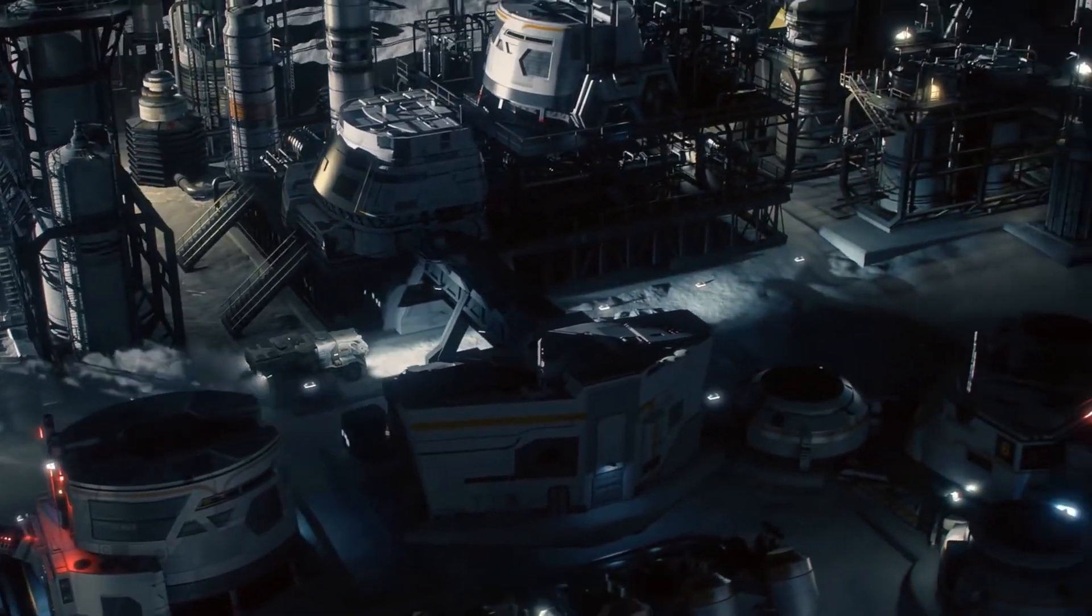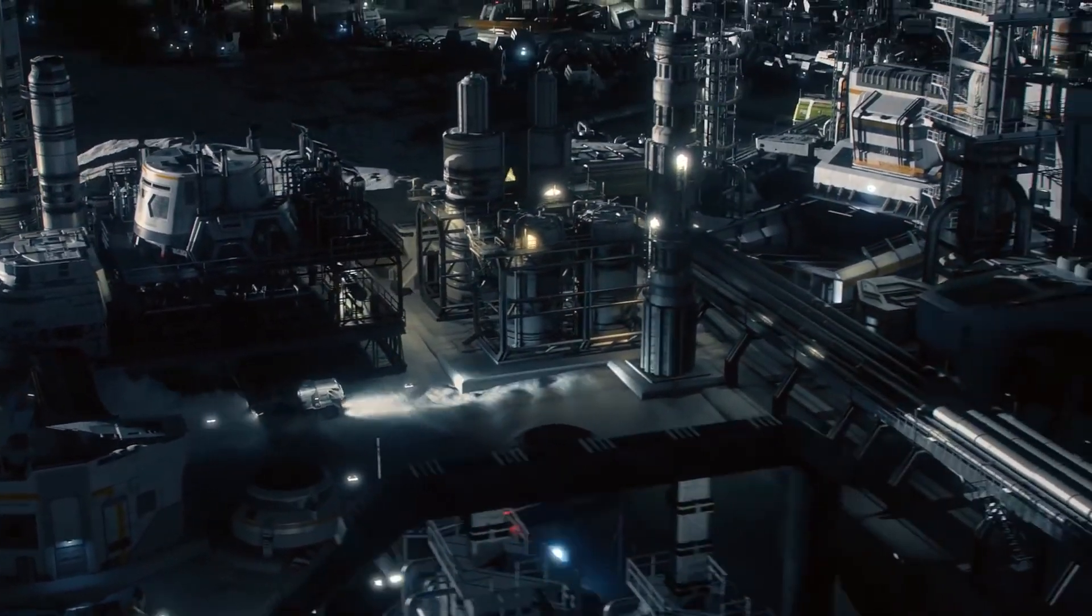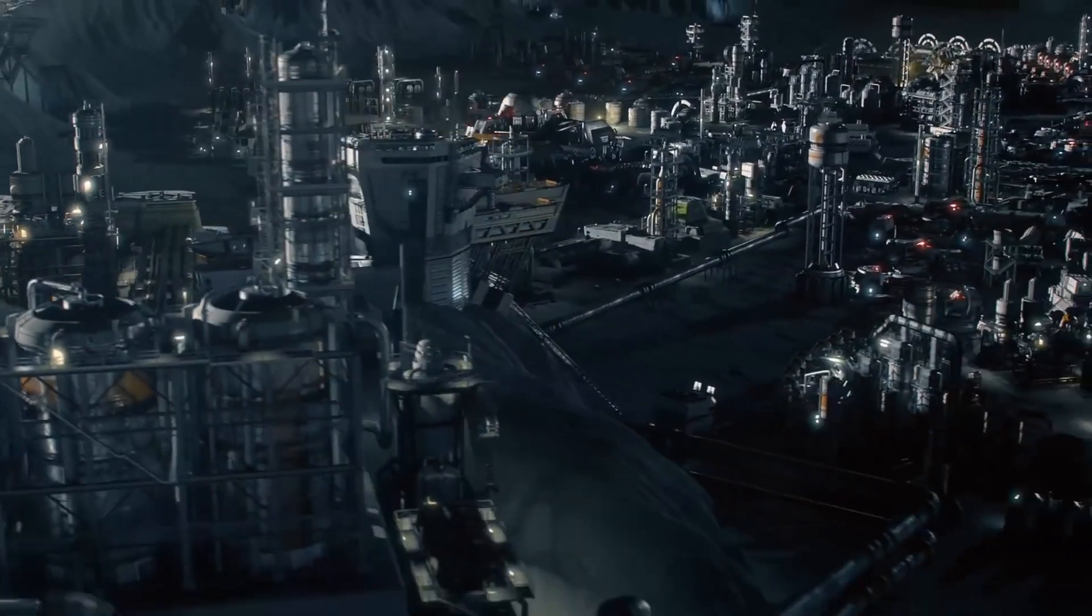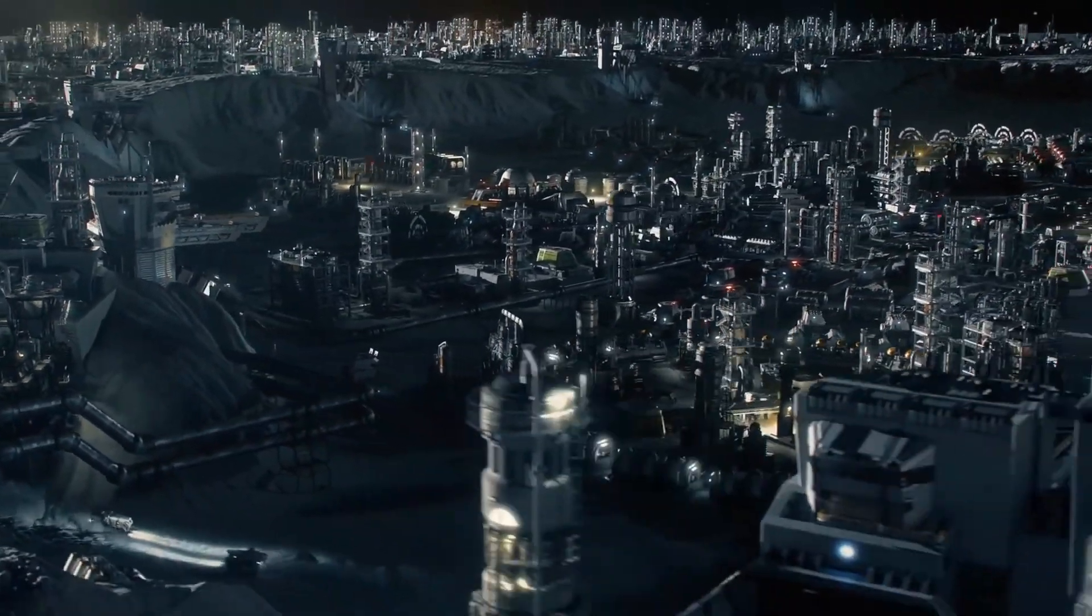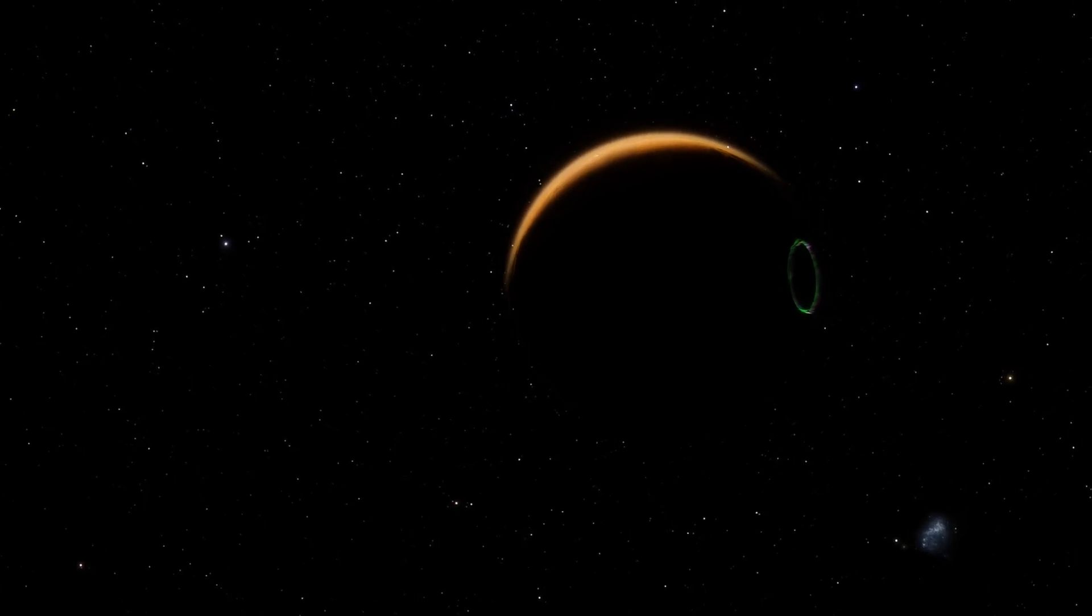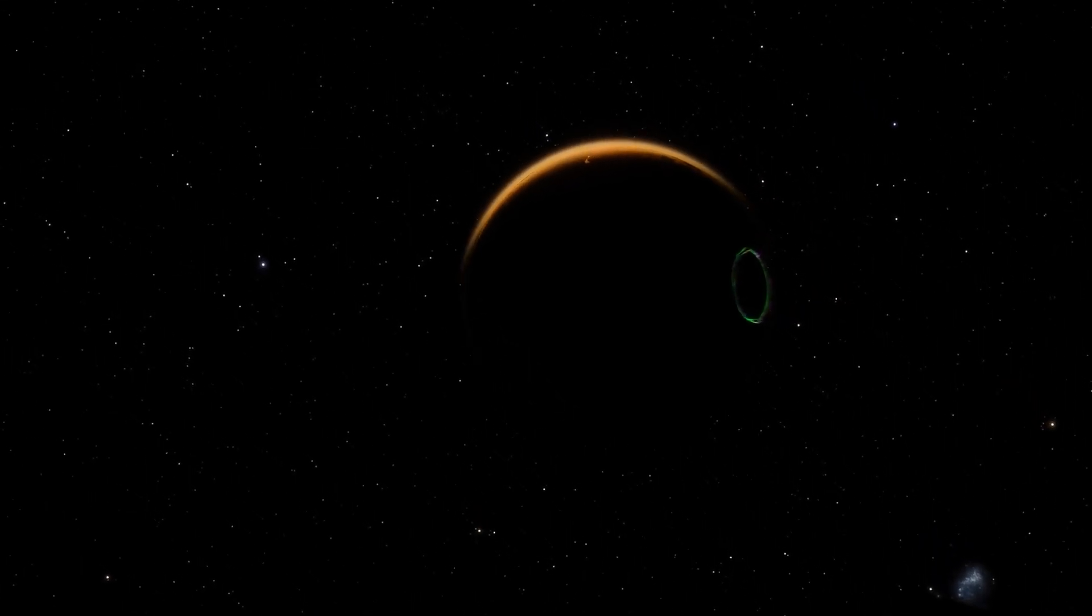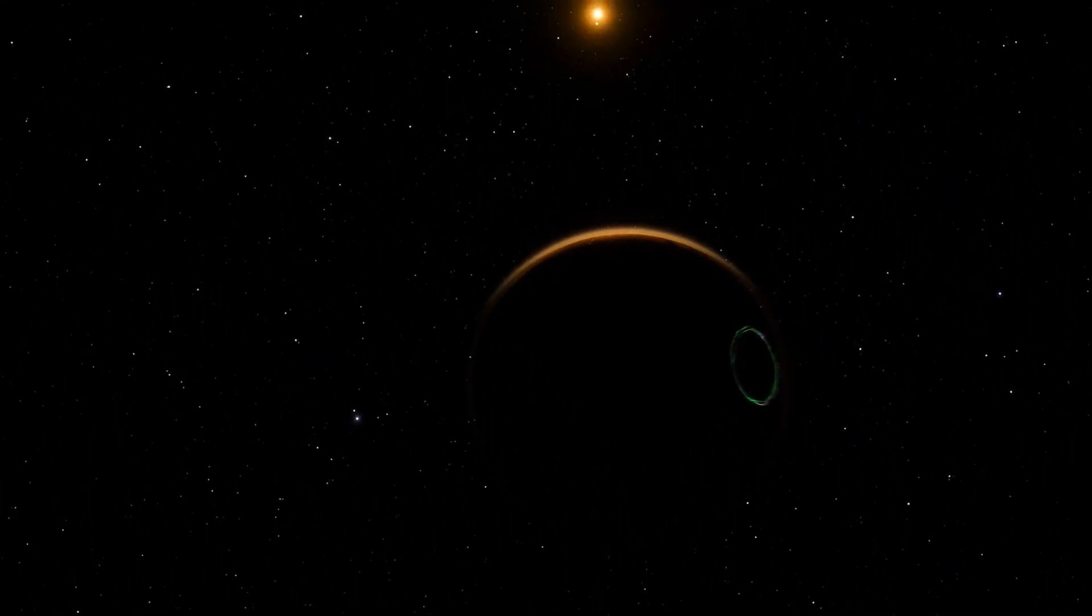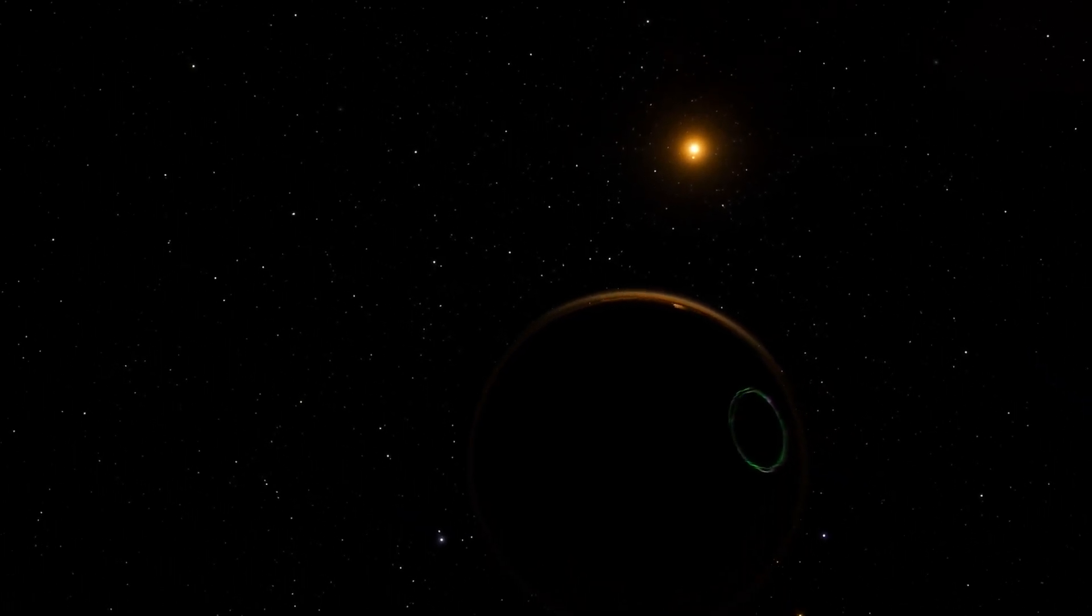By focusing on Proxima Centauri b, the closest exoplanet to Earth, the telescope revealed the presence of unusual bright lights emanating from its surface. What could be the cause of these unusual lights on Proxima Centauri b? Could they indicate the existence of life beyond our own planet?